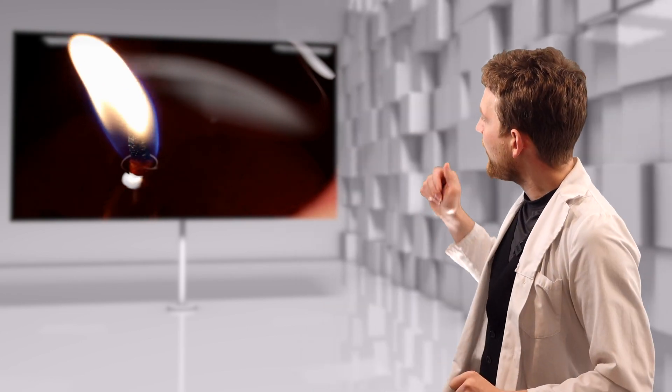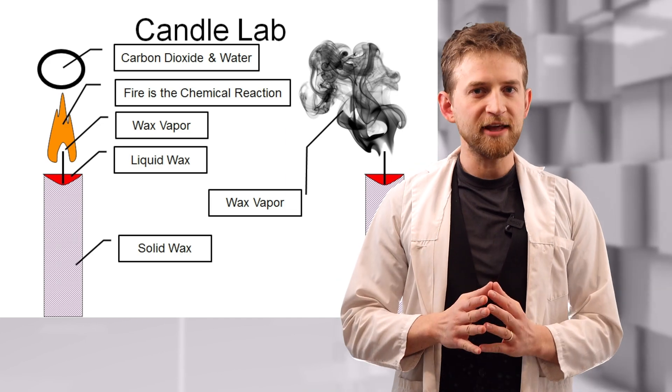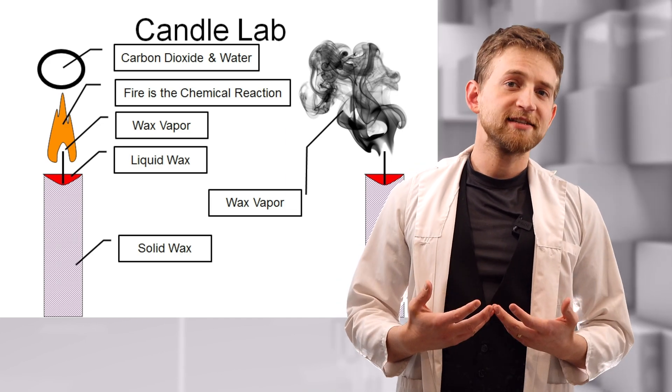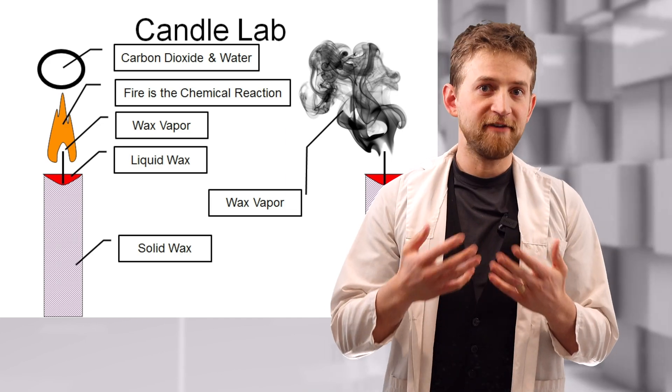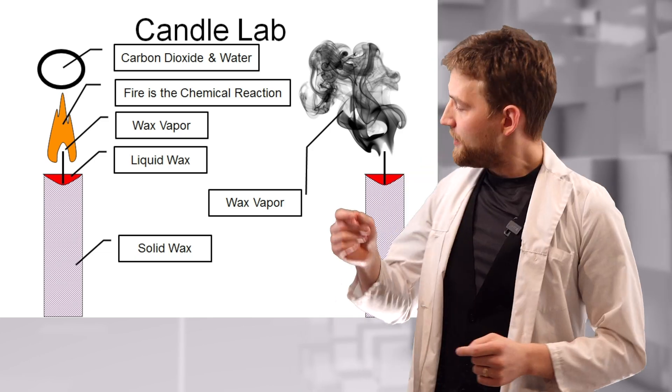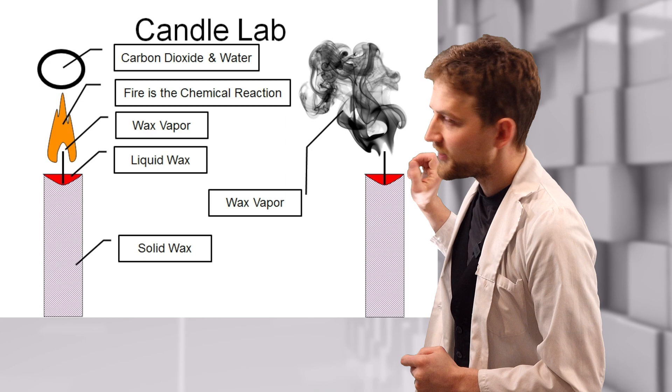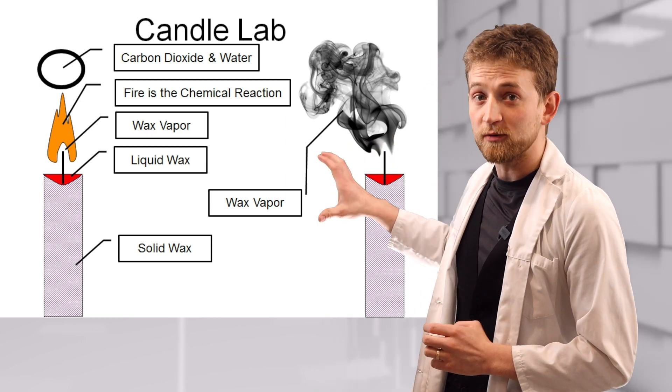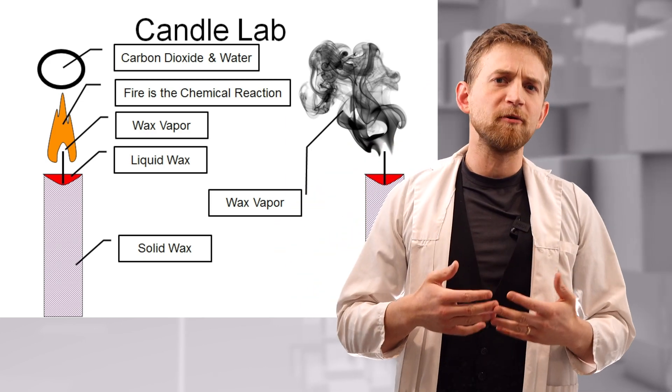So what happens? Well, we light the candle and the wick has already absorbed some of the liquid wax during the manufacturing of the candle. Now the heat of that initial flame vaporizes the wax that is inside of the wick. And that vaporized wax mixes with the oxygen in the air, and we'll get to that later. But for now, the wax has been vaporized outside of the wick, which means the wick itself will start burning,